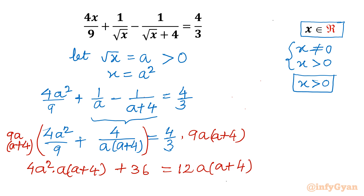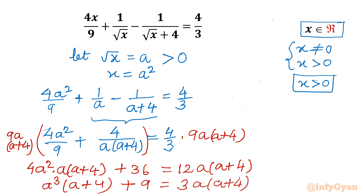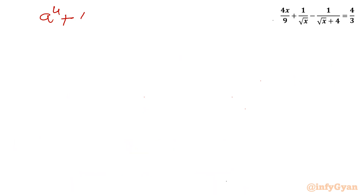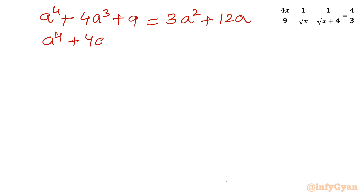After dividing through by 4, the equation becomes a cubed(a+4) plus 9 equal to 3a(a+4). Expanding and collecting all terms to one side gives: a to the 4th plus 4a cubed minus 3a squared minus 12a plus 9 equal to 0.